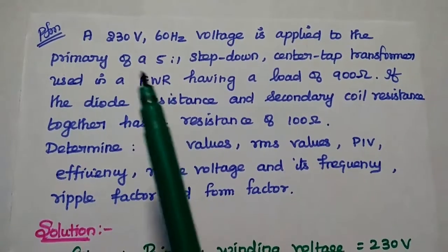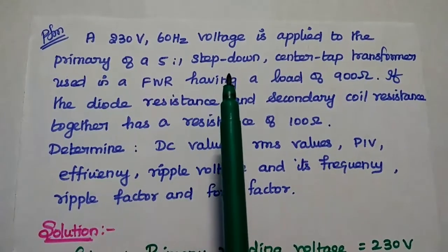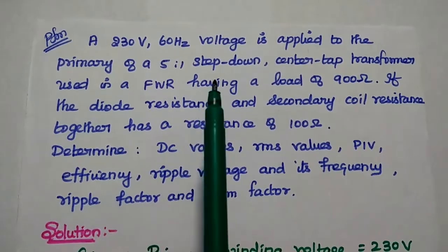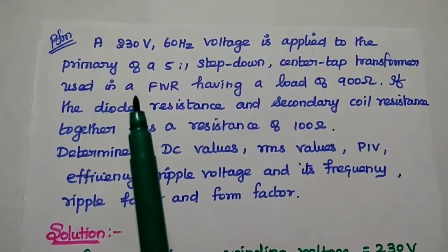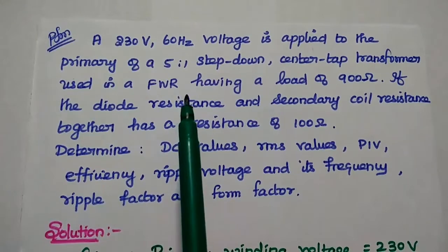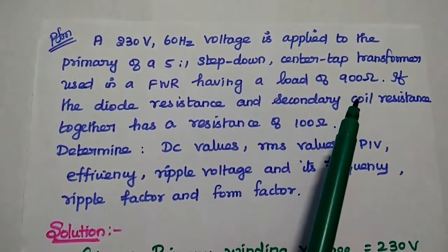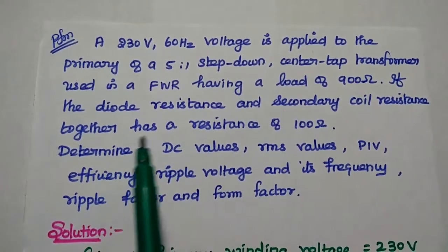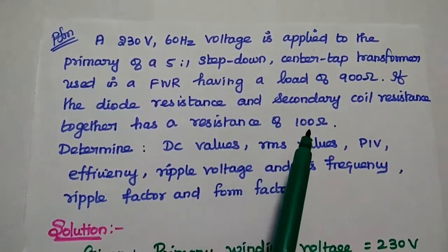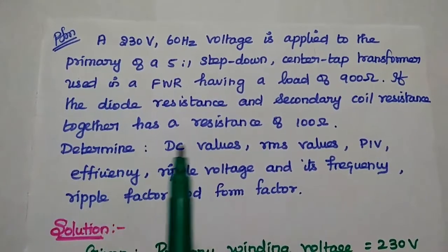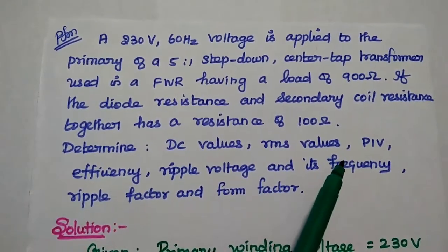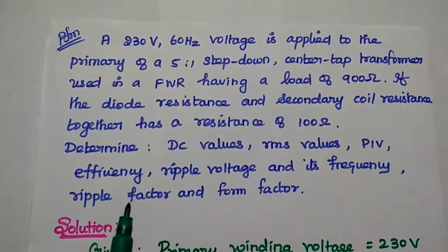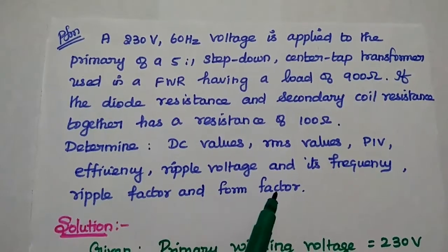Let's solve this problem. A 230 V, 60 Hz voltage is applied to the primary of a 5:1 step-down center-tapped transformer used in a full wave rectifier having a load of 900 Ω. If the diode resistance and the secondary coil resistance together have a resistance of 100 Ω, determine the DC values, RMS values, peak inverse voltage, efficiency, ripple voltage and its frequency, ripple factor, and form factor.